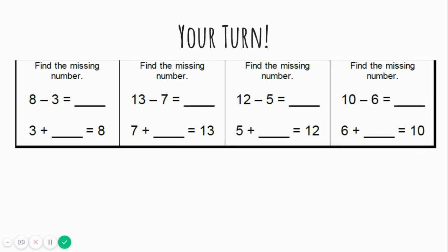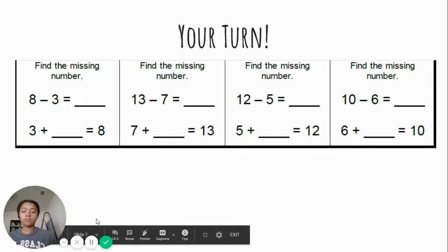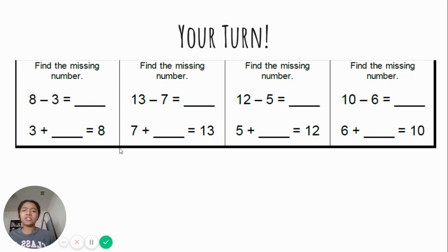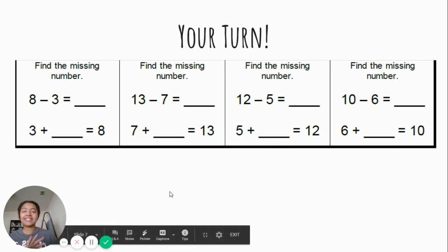Now it's your turn. You can fill these out at home. Find the missing number. Eight minus three equals blank. Three plus blank equals eight. Thirteen minus seven equals blank. Seven plus blank equals thirteen. Twelve minus five equals blank. Five plus blank equals twelve. Ten minus six equals blank. Six plus blank equals ten. Wow. Look at all of these problems. They have so many things in common. I want you to talk about it at home. See you tomorrow.